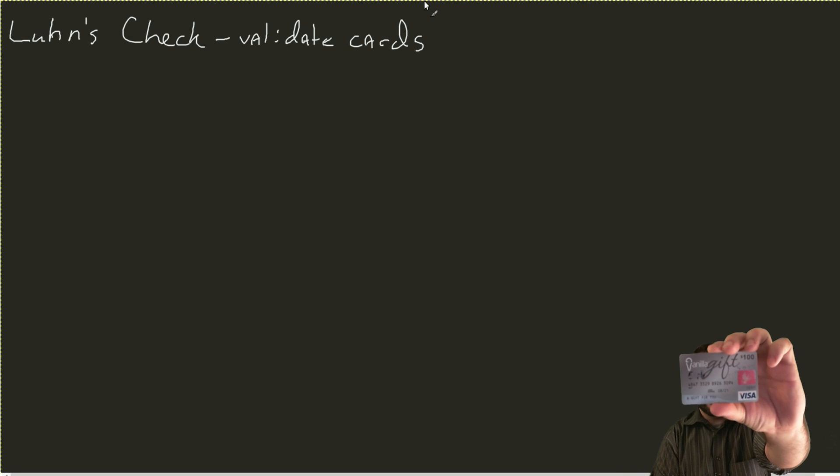And we can prove this. We can look at it, and here's a valid credit card. Let my camera zoom and focus on that. Don't worry, it is empty. But we're going to use this card to prove the Luhn algorithm.